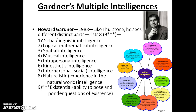Another major theory is Gardner's multiple intelligences. Howard Gardner, who you've seen in one of the videos already, developed this in 1983. Like Thurston, he saw distinctly different parts. He adds some we hadn't thought about before, though the basic criticism is too many or not enough. What he came up with includes verbal-linguistic intelligence, logical-mathematical, spatial, and musical intelligence — so musicians get to show their intelligence here.